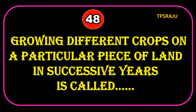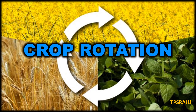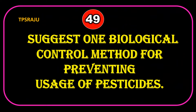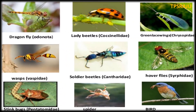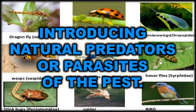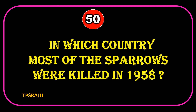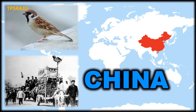Growing different crops on a particular piece of land in successive years is called crop rotation. Suggest one biological control method for preventing usage of pesticides: introducing natural predators or parasites of the pest. In which country were most sparrows killed in 1958? China.